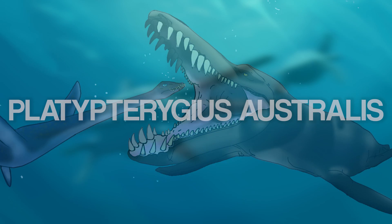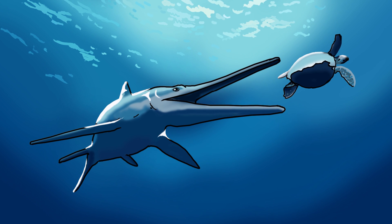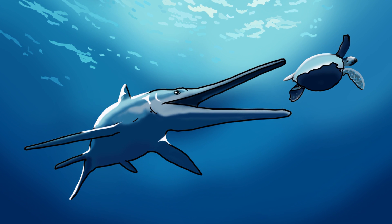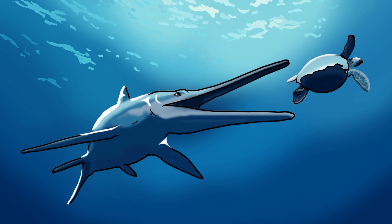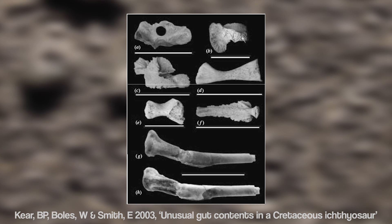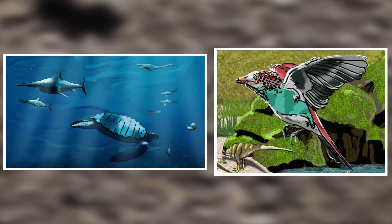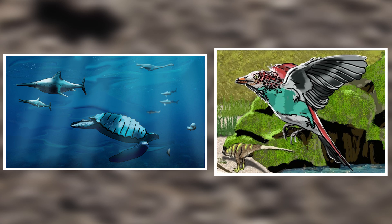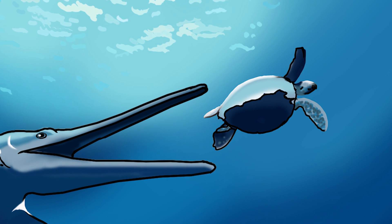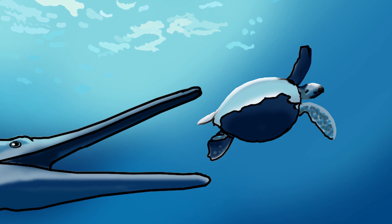An ichthyosaur named Platypterygius was another apex predator of the Aramangas Sea. The ichthyosaurs were marine reptiles with streamlined, fish-like bodies and enormous eyes, most likely used to hunt for fish and squid in dark waters. With its last meals preserved in its gut, we know it was an opportunistic predator, preying on anything from turtles to even birds like Nanantius. Platypterygius australis was, unfortunately, destined to go extinct, probably due to a combination of factors such as migration, food availability, and birthing grounds.